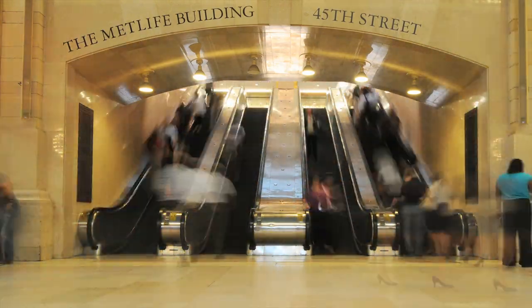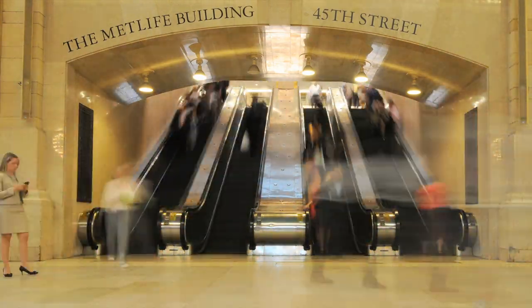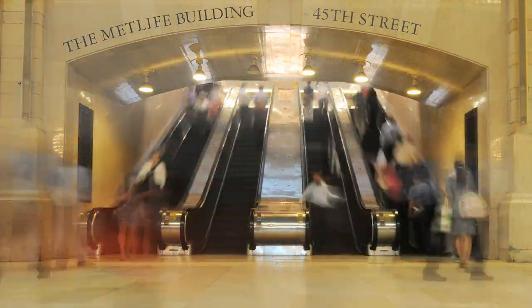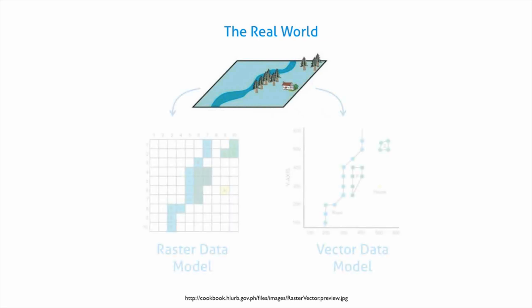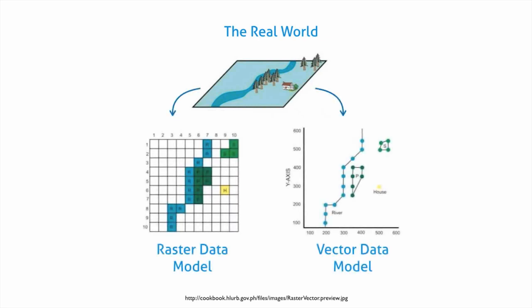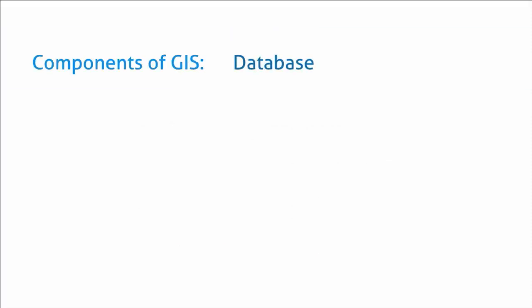The easiest way to think of GIS is to view it as an integrated system of components. GIS includes information about the real world that has been simplified and abstracted into a digital database, including spatial and non-spatial features. GIS is also the hardware and the software that allows for the analysis of the data.